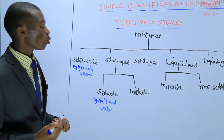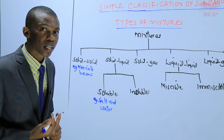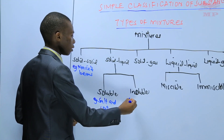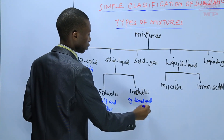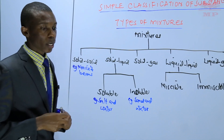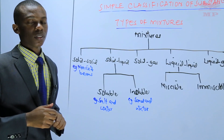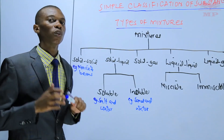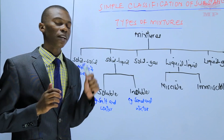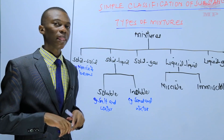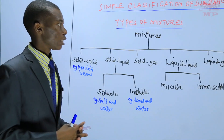An example of an insoluble solid-liquid mixture is sand and water. When you put sand in water and stir, it cannot dissolve — even if you stir for a long time. That makes it an insoluble solid-liquid mixture. Other examples include wheat and water, which also cannot dissolve.